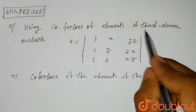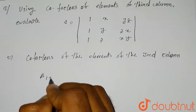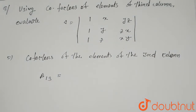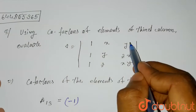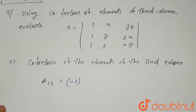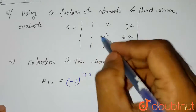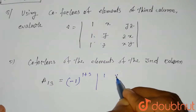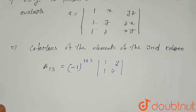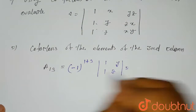We are asked to find cofactors of the third column. So A13 is the cofactor. A13 equals minus one to the power i plus j, where i is the row number and j is the column number. For the first element, i plus j equals one plus three which is four. Eliminating row one and column three, you multiply and subtract the two elements, giving cofactor A13 equals z minus y.